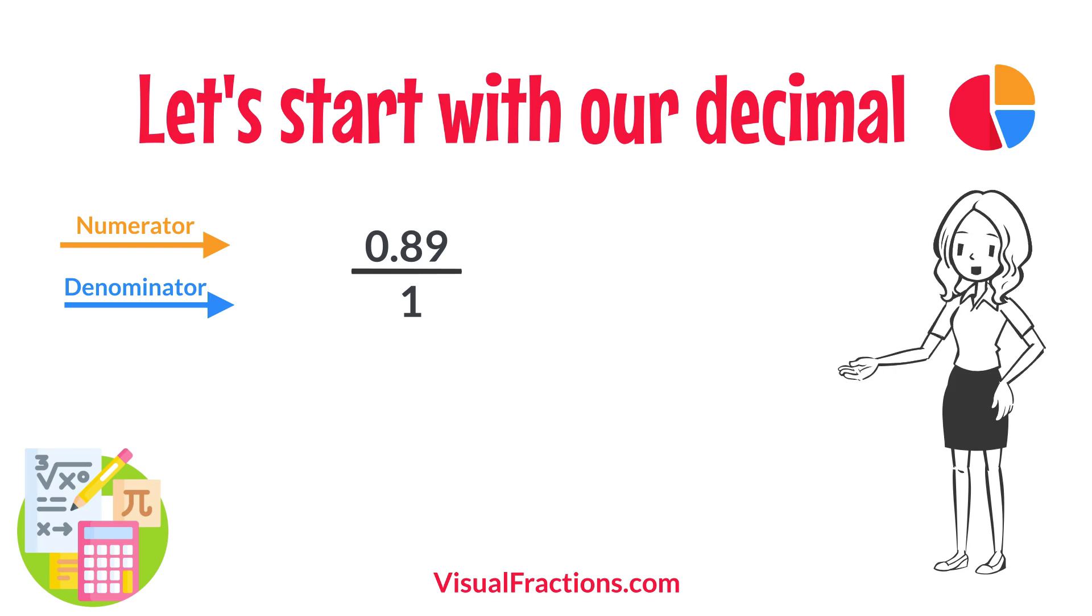This sets up the conversion process where we multiply both the numerator, the decimal, and the denominator, 1, by 100 because there are two decimal places.